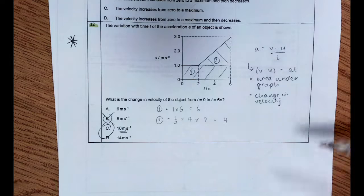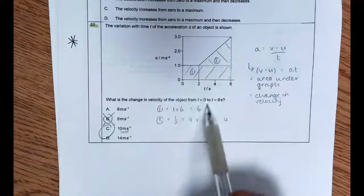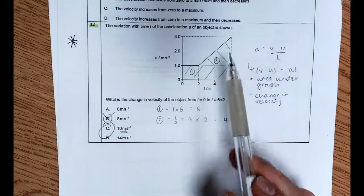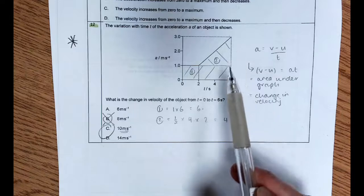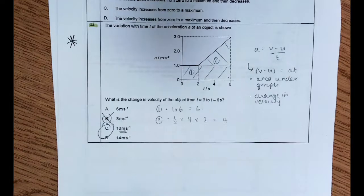So I separated it out into two sections. Section 1, I've got a rectangle, 1 by 6, and then 2, I've got a triangle, so half times base times height. So we've got 4 on the bottom, 2 along the side, so half times 4 times 2 is 4. Add those together and you get your 10 meters per second.